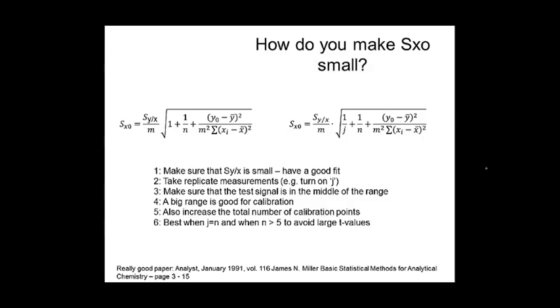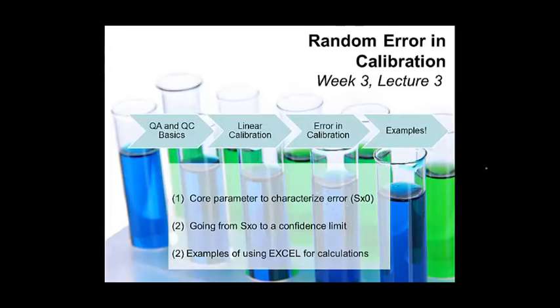However, as you can also see, you can make the square root component of this equation small by, for example, taking replicates. The other thing you can do is it's helpful if your signal is actually in the middle of your calibration range. So if Y zero minus Y bar is zero or close to it, then that third term drops out completely. The other thing you can do is make SXX very big. If that's a very big value, then one over a big value is close to zero. There's a really interesting paper I give here that goes through this, and they had a really great proof that you actually optimize your SX zero when J is equal to N. And you really want an N greater than five to avoid your T values being too large when you turn them into confidence limits.